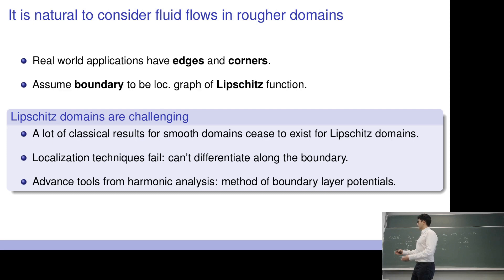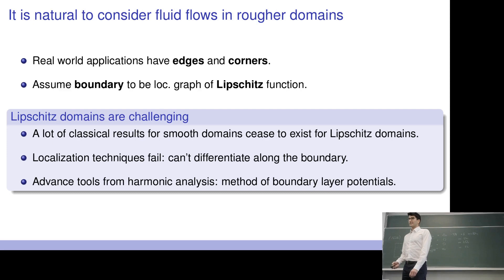One needs to think about other tools. Many of them come from harmonic analysis, and one prominent example is the method of boundary layer potentials, which is used here to work with this kind of rough boundary.